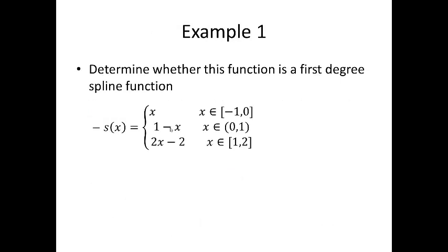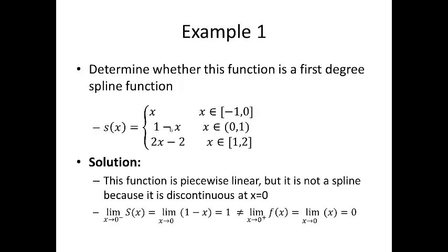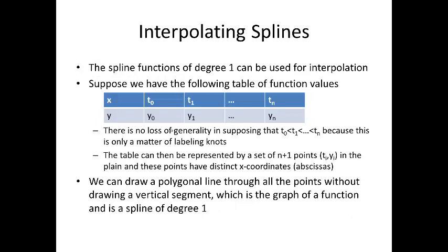Here's an example. Let's take a look at this function. Now, this one is actually piecewise, and it's linear. And we want to see whether it's a first degree spline function. Well, it is piecewise linear, but it's not a spline, because it's discontinuous at x equals 0. In particular, if we take the left and right hand side limits of the function f of x, on the left side we get 1. That's the limit of 1 minus x as x goes to 0, and that's equal to 1. And if we take it from the positive side, it's the limit as x goes to 0 plus of f of x, which is the limit as x goes to 0 of x, which is equal to 0.